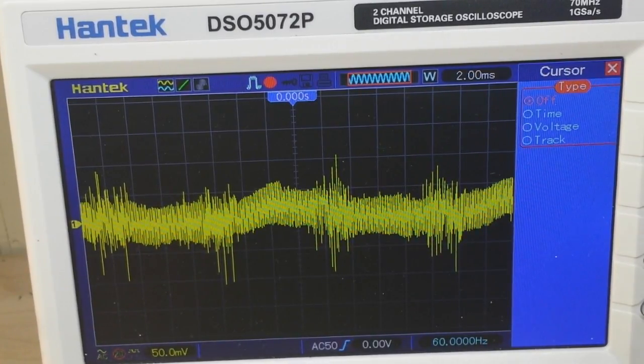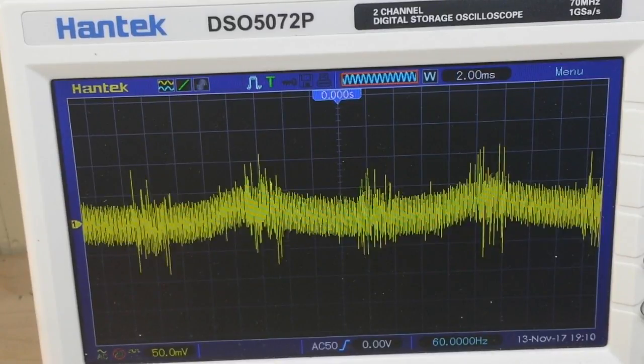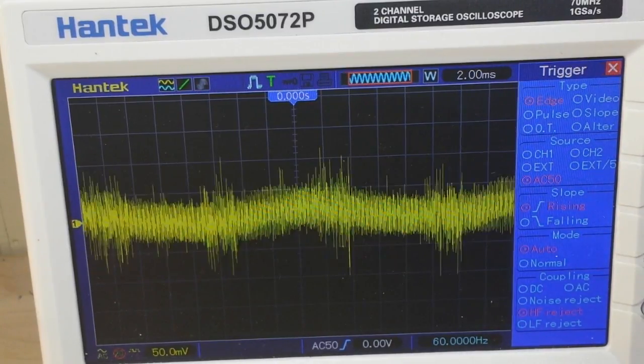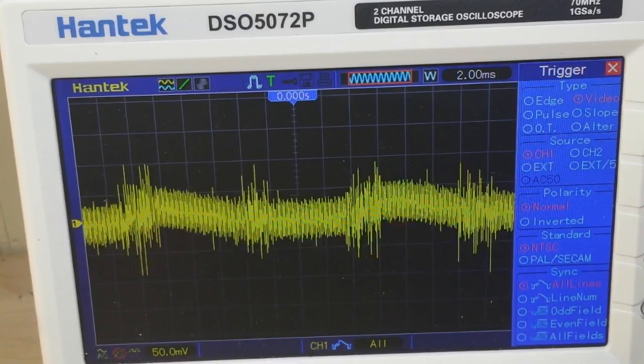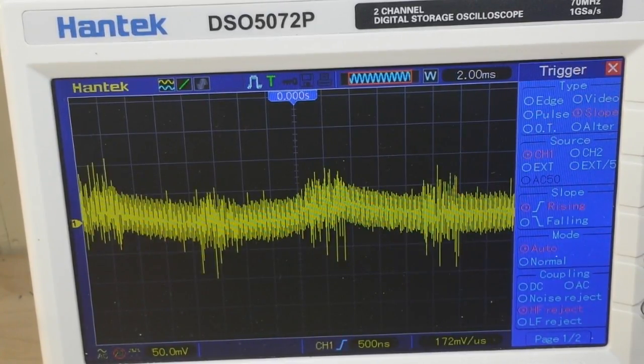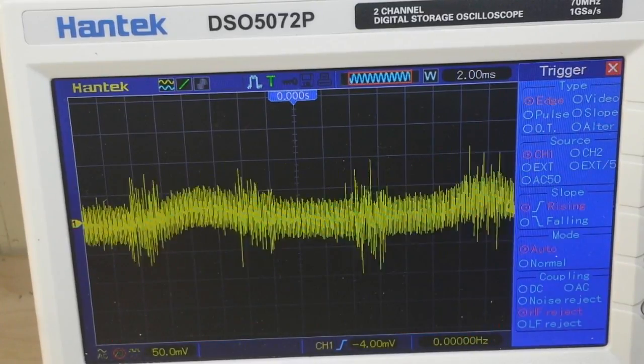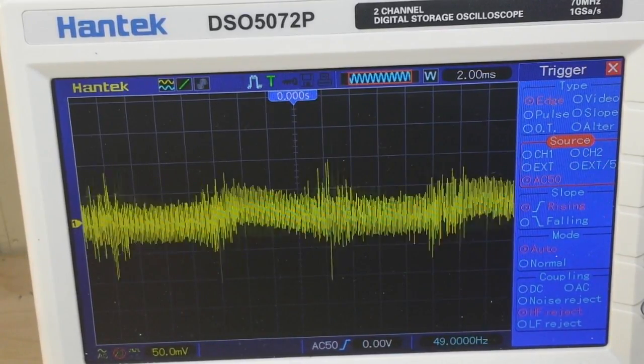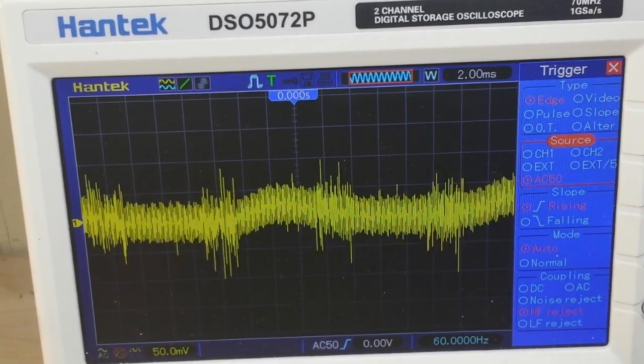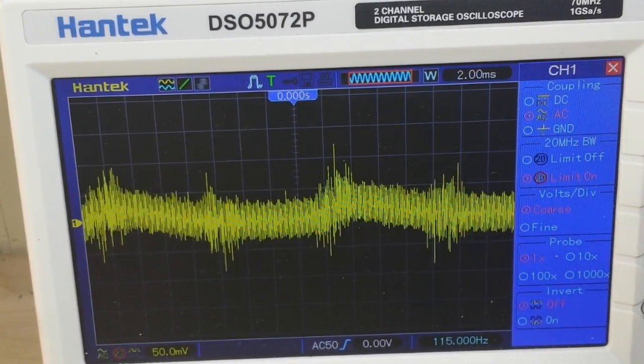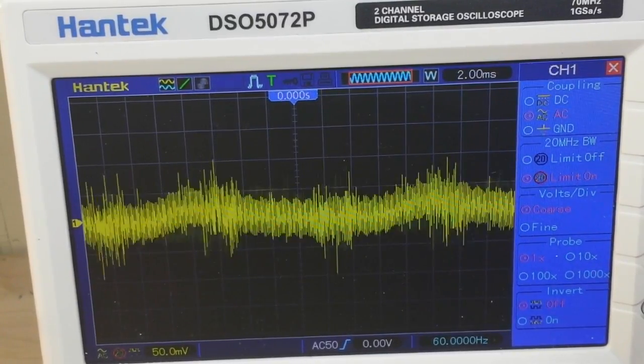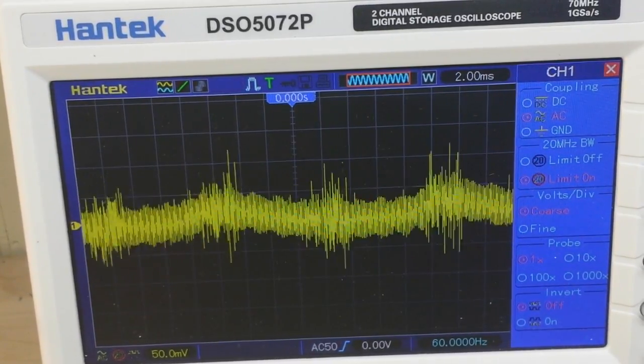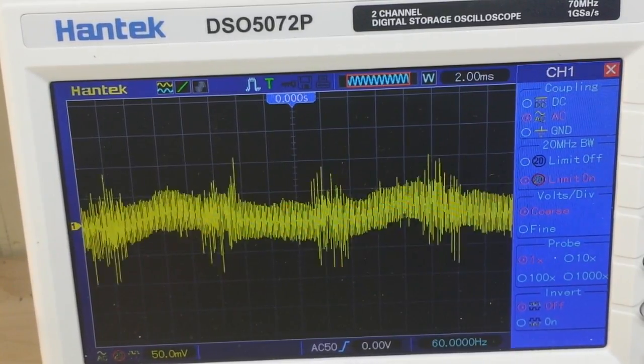All right, I'm going to turn off the cursors. We'll put it back in run mode. A couple things I want to show you. When we go into the trigger menu, one of the things we want to do here is adjust our trigger to our external. And then our channel, we definitely want to be AC coupled and we want our bandwidth limit on.